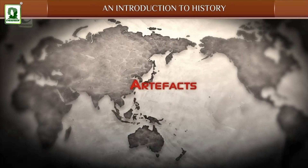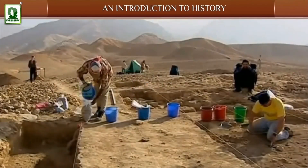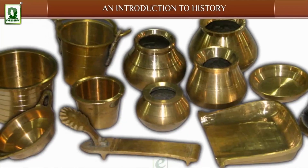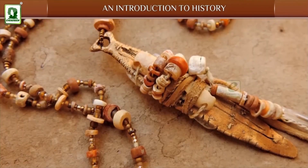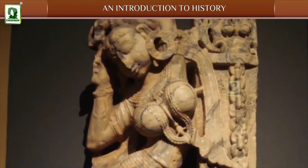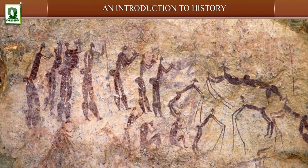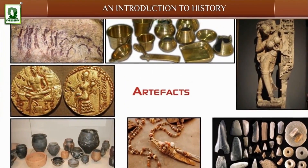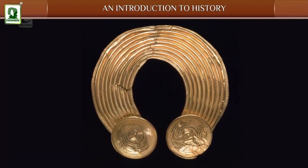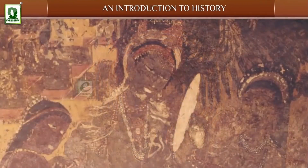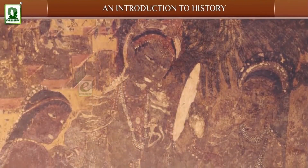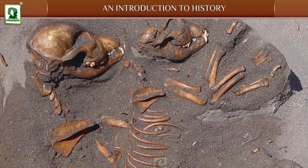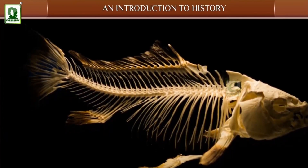Artifacts: At excavation sites, archaeologists find man-made objects like pottery vessels, stone tools, jewellery, coins, sculptures, and paintings made or used by people of ancient civilizations. These objects are called artifacts. The presence of metal jewellery indicates the level of scientific advancement. Cave paintings throw light on the type of clothes, culture, and social and religious customs. Bones of animals, birds and fish help us find out what people ate in the past.